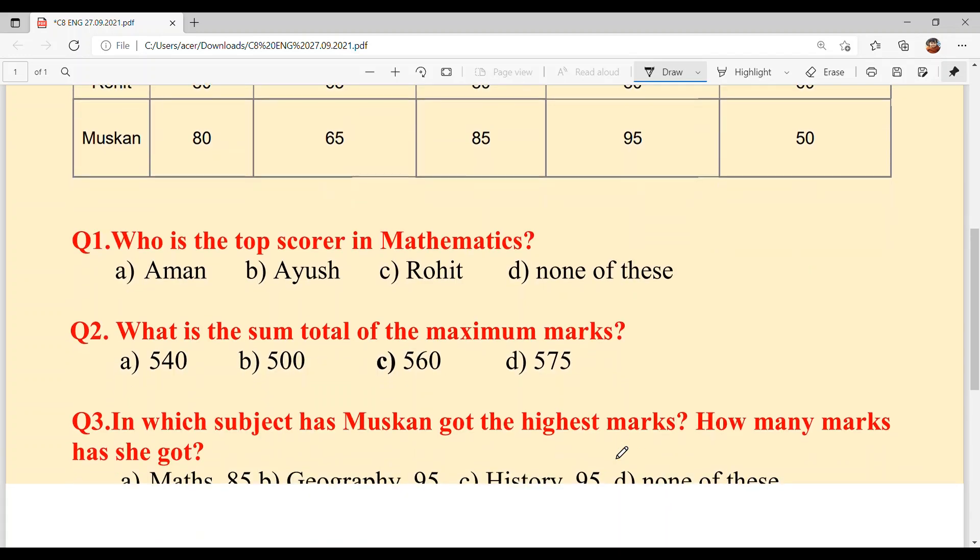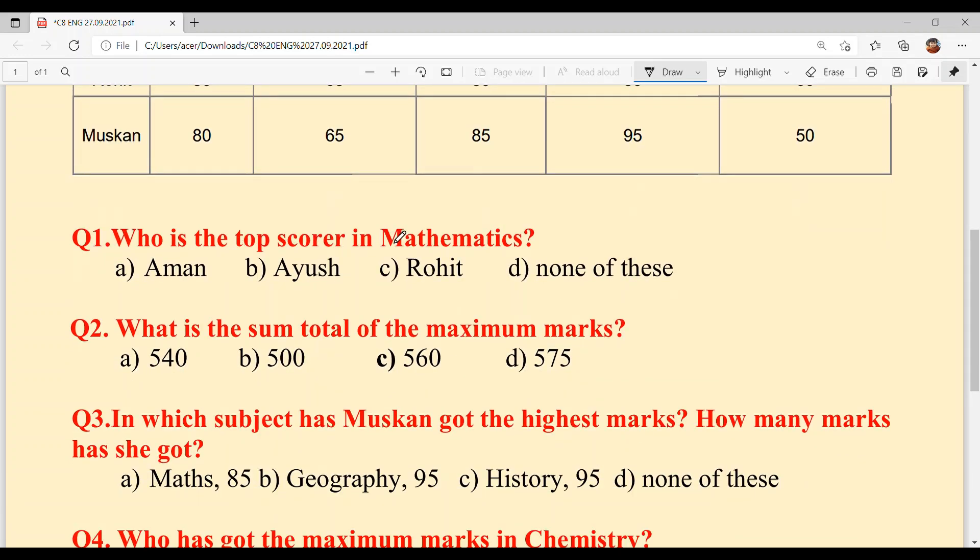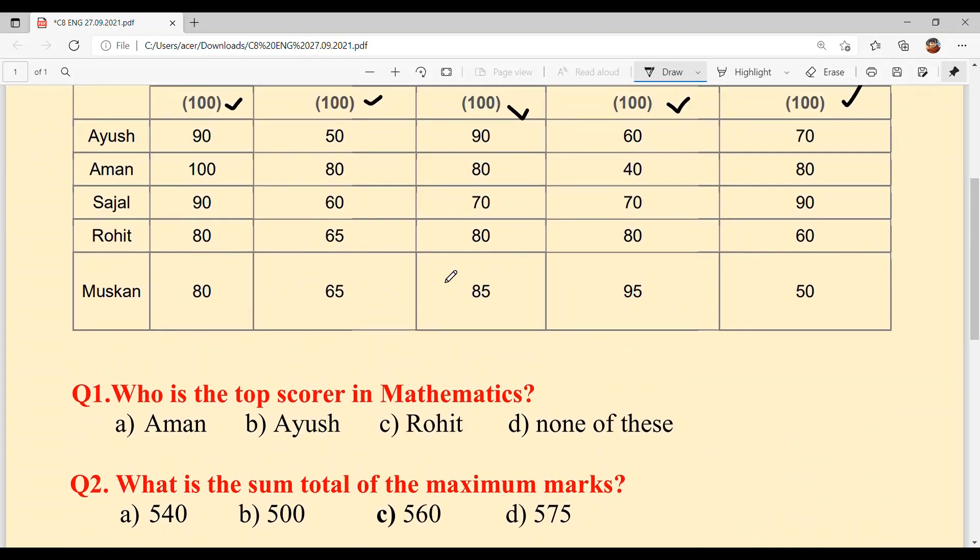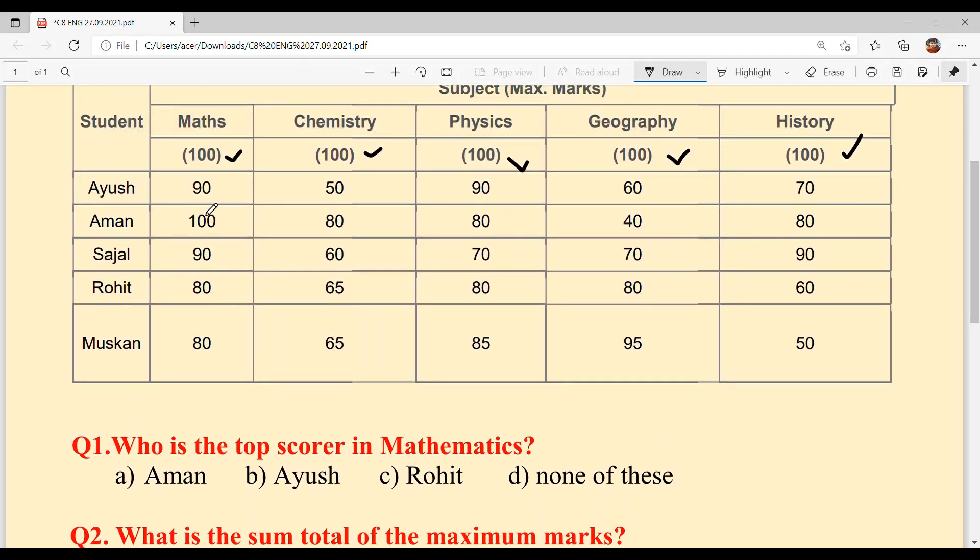Now let's answer our questions. Question 1: Who is the top scorer in Mathematics? Options are a) Aman, b) Ayush, c) Rohit, d) none of these. Look at the Maths column - who has the highest marks? Aman, because it's 100 out of 100. Option A, Aman.